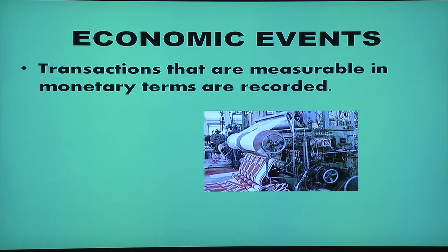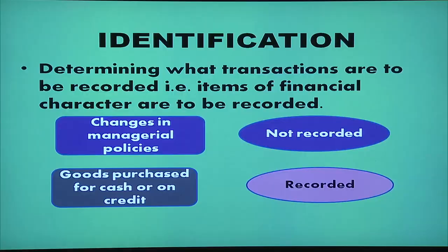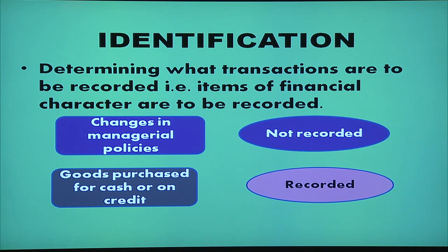Transactions that are measurable in monetary terms are recorded in the accounting process. As a process of accounting, you have to identify which transactions are to be recorded. Items of financial nature are to be recorded — goods purchased for cash, goods purchased for credit, etc. — because you can express them in financial terms, in money terms.